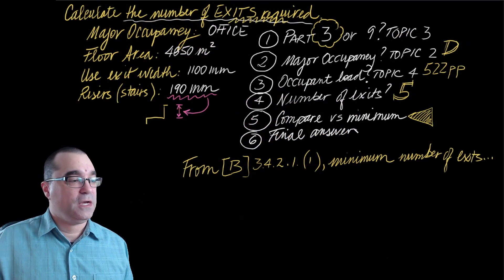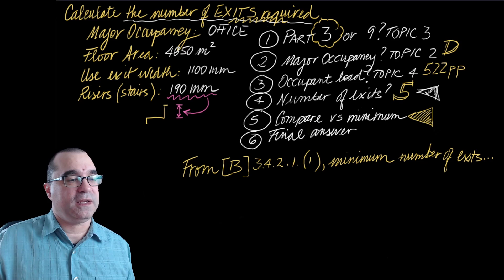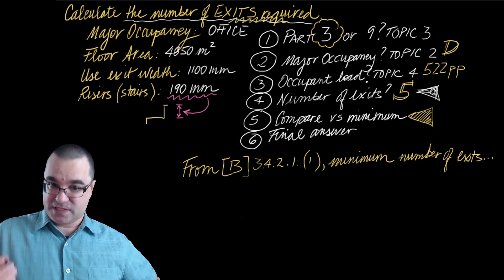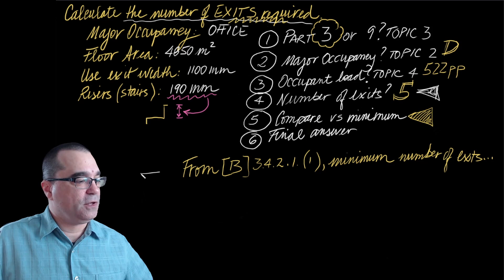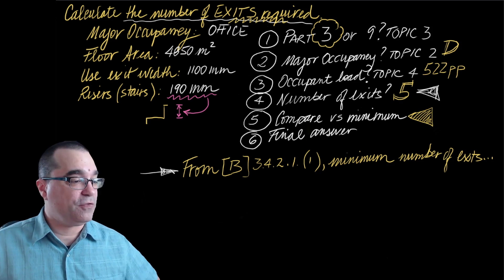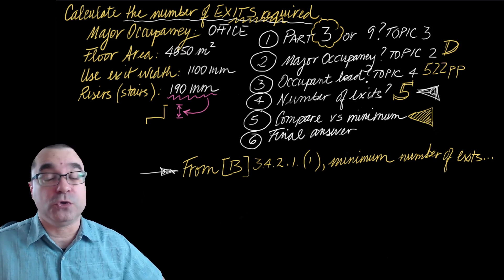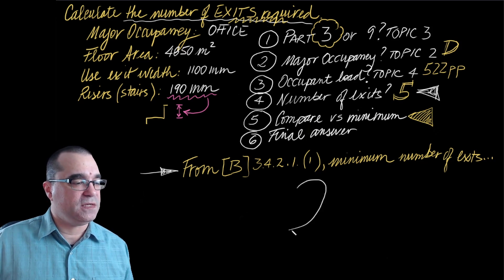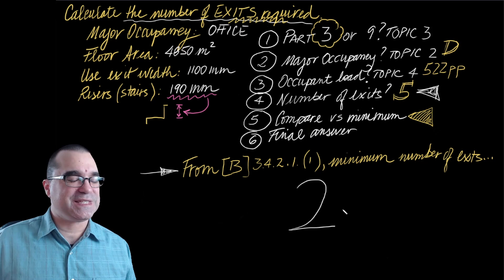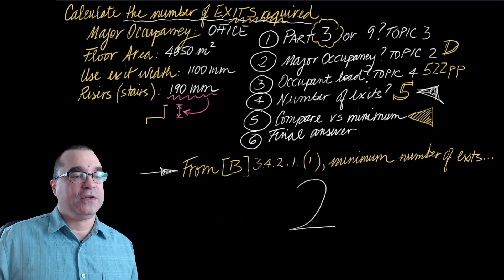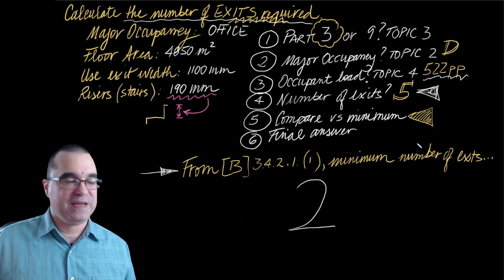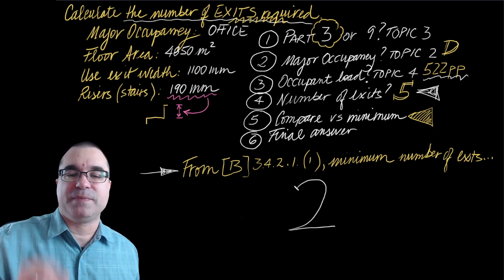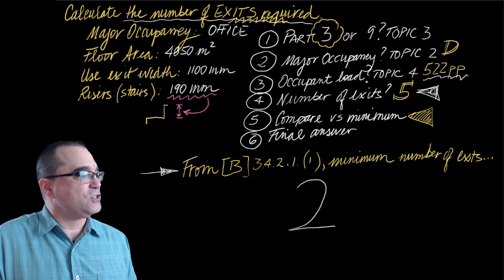For step number five, we have to use the number of exits that we calculated right here. And we have to compare it against the smallest number that the building code says you must have for this kind of situation. So the appropriate location in the building code where to find the minimum required number of exits is under sentence 3.4.2.11, which says that the minimum number of exits you must have is two. So what does that tell us? We find that the 522 people require five exits. We find that the building code says you have to have at least two exits.